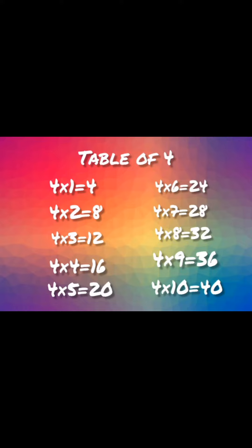Four sixes are twenty-four. Four sevens are twenty-eight. Four eights are thirty-two. Four nines are thirty-six. Four tens are forty.